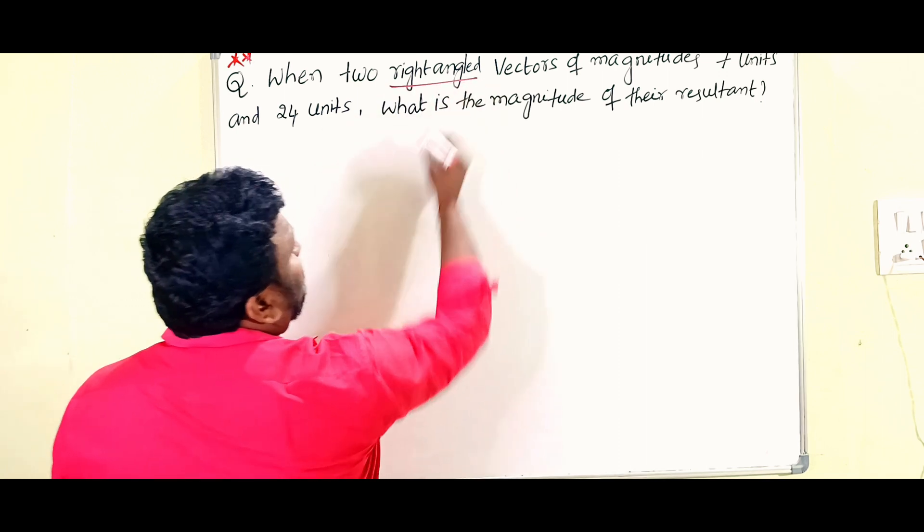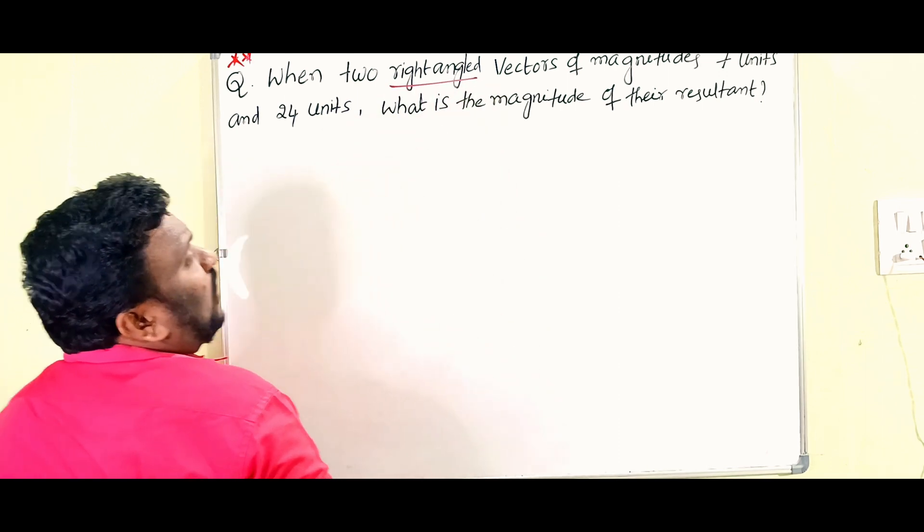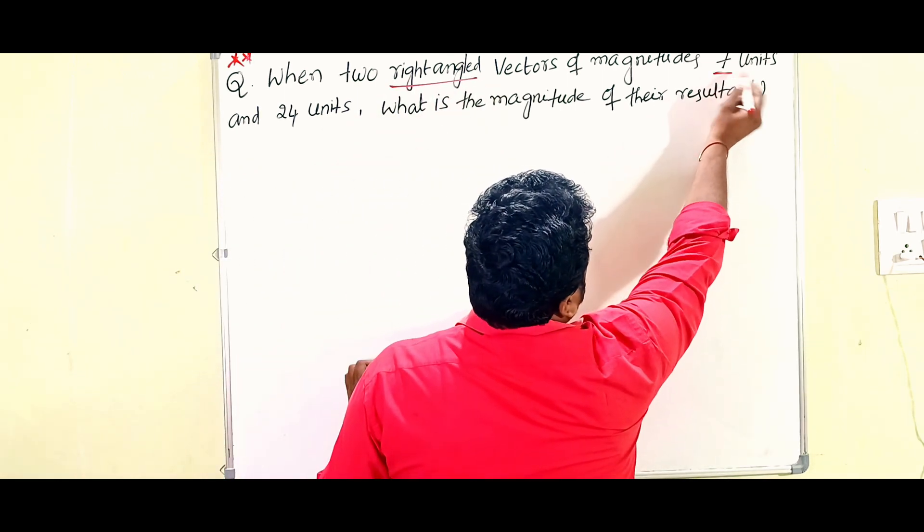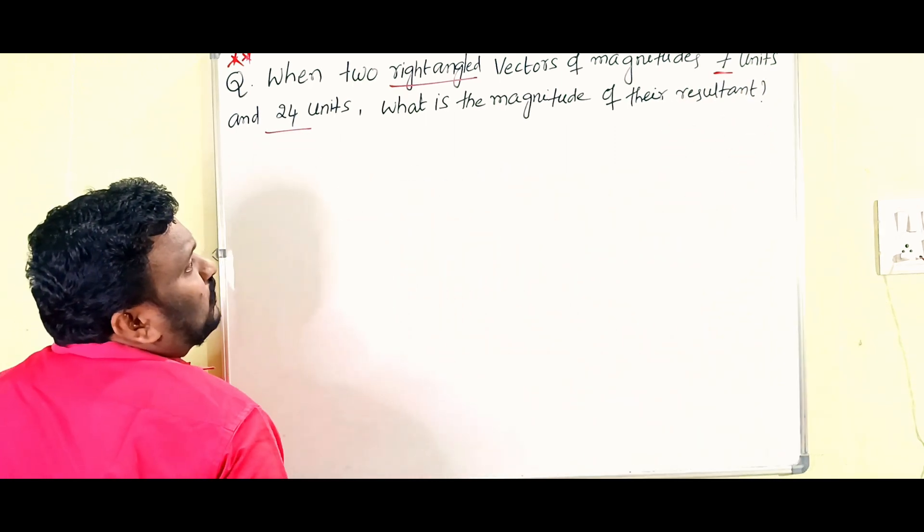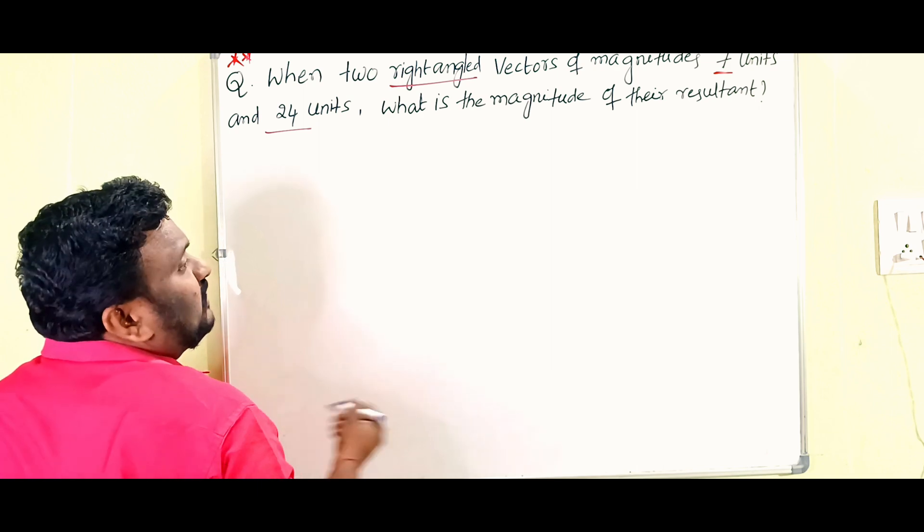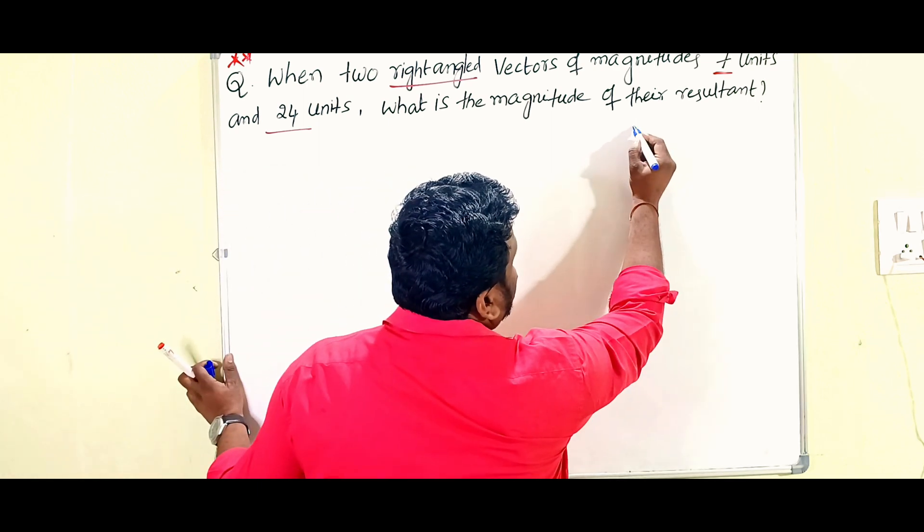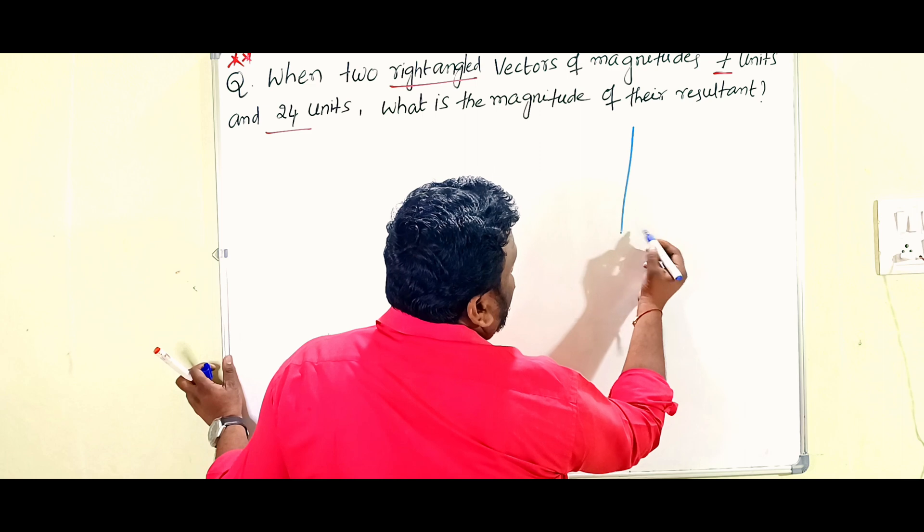They have magnitudes of 7 units and 24 units. What you have to find: we have to find out the magnitude of their resultant. So this is one vector and this is another vector.